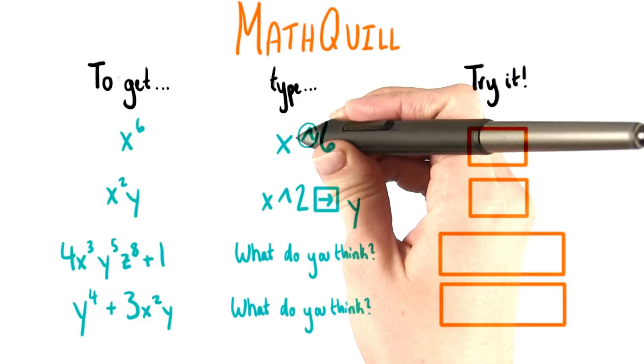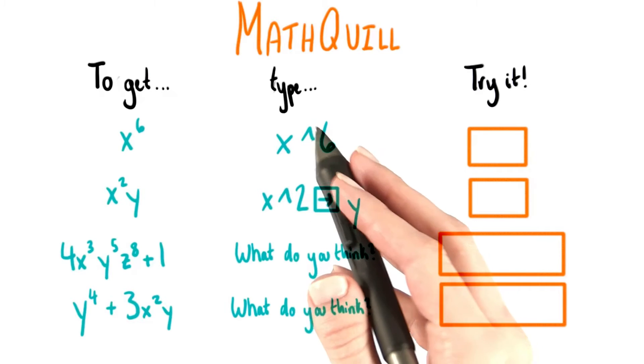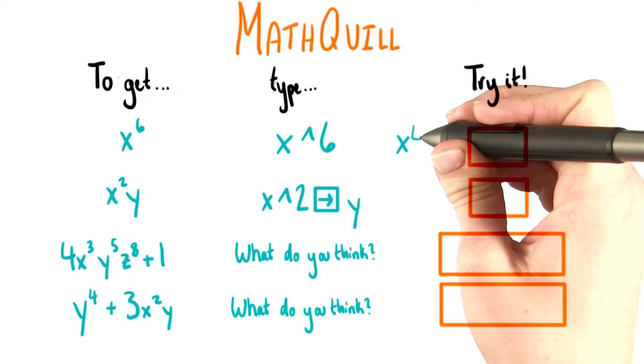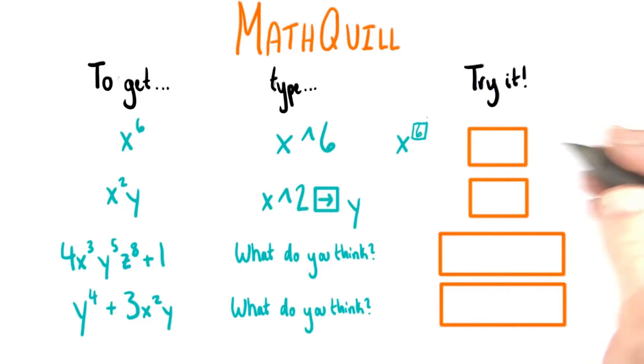Now of course in order to make a caret, you might need to type different things depending on what kind of keyboard you have. But you'll notice that when you type the caret, the cursor in the box will move up into the superscript spot and you'll be able to type up here a little 6. It's pretty cool.